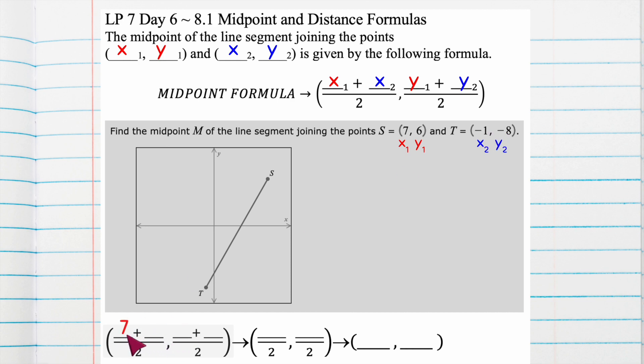So I'm going to add the x's together. So x1 was seven, x2 is negative one, y1 was six, and y2 is negative eight.